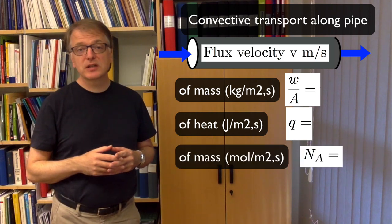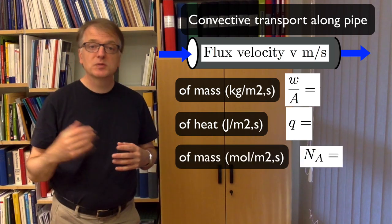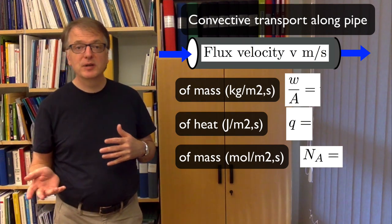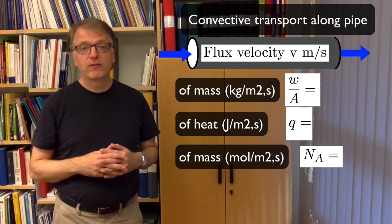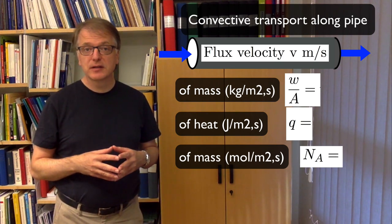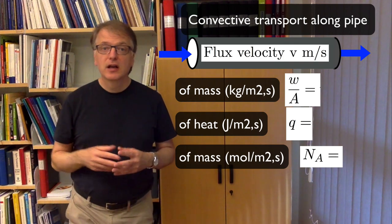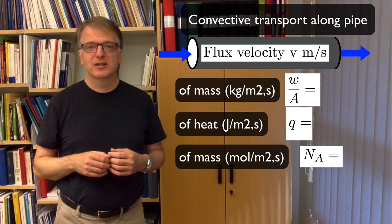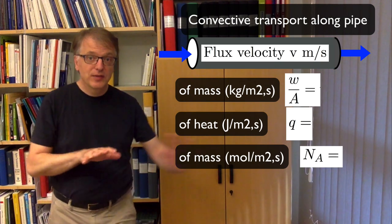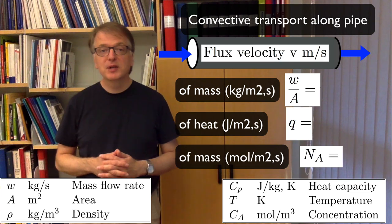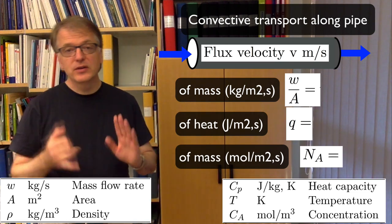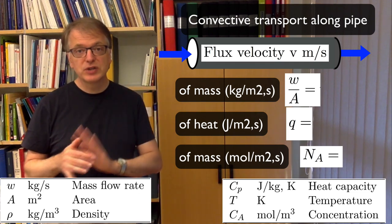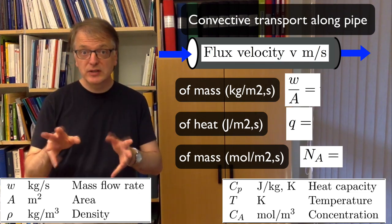For mass transfer I want you to try to write it in two different units: in kilograms per square meter and second and in moles per square meter and second. We will use w/A for kilogram per square meter per second, and N_A for mole per square meter per second. For heat transfer express it as joule per square meter and second, and we will use the small q for that. You have these other parameters you can use: the area, density, heat capacity, temperature, and concentration. So pause here and try for yourself.